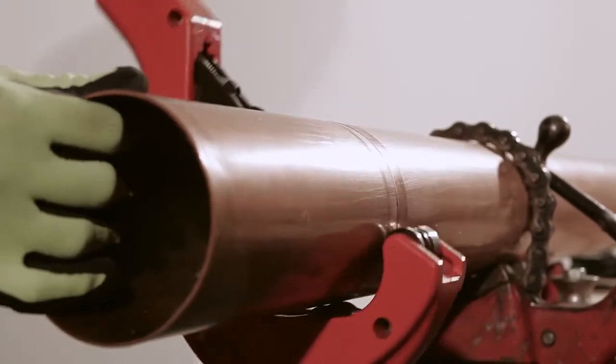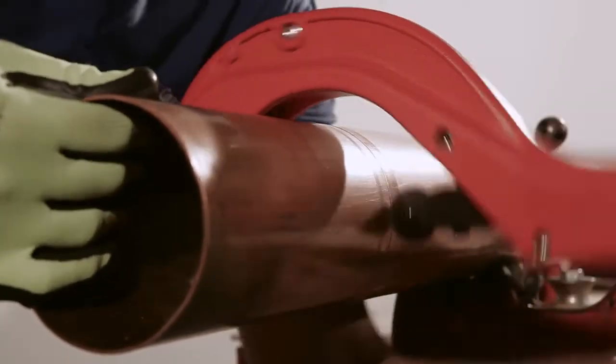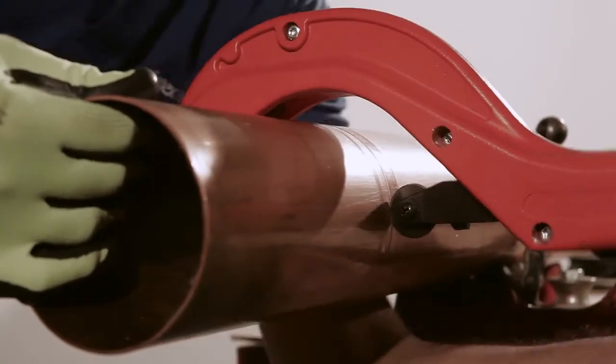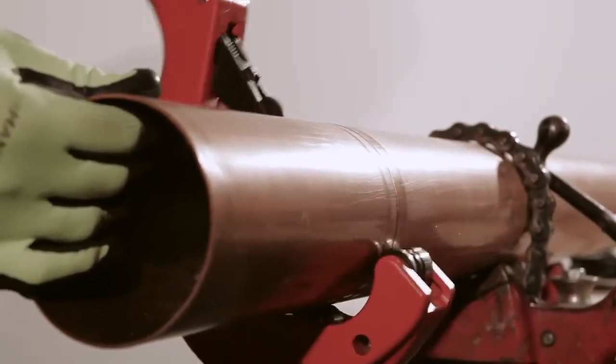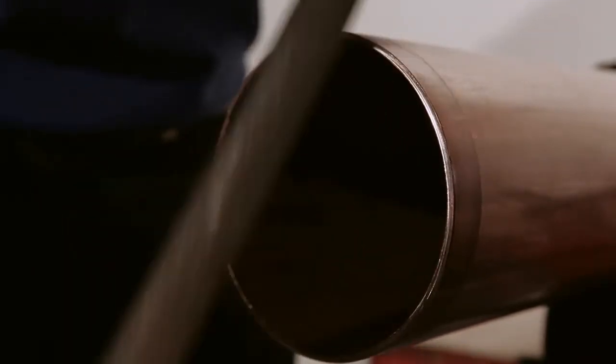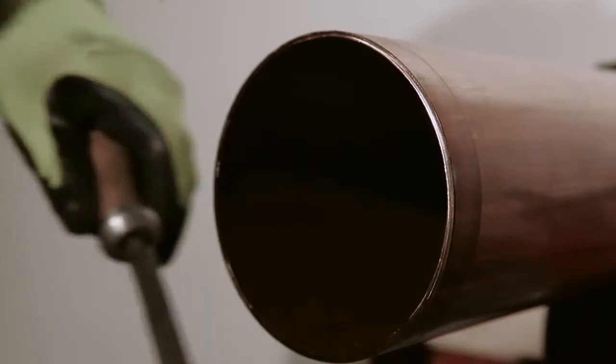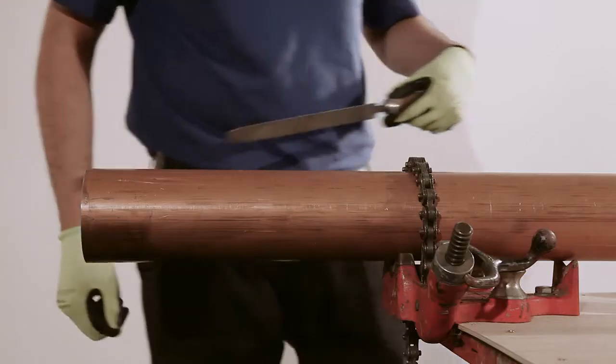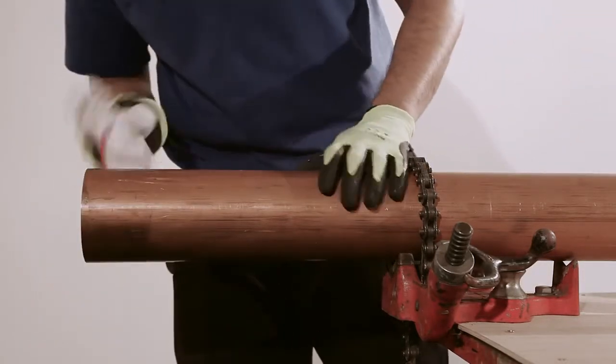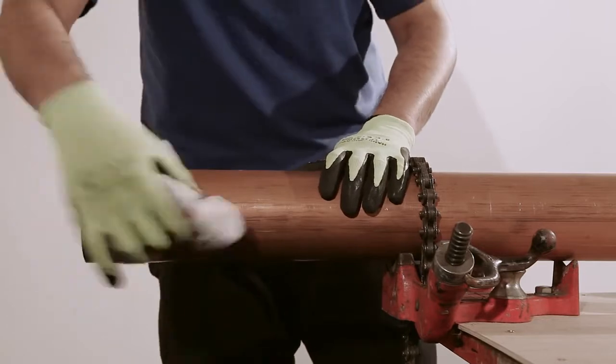Using the tube cutter at the prescribed mark, cut the tube squarely supporting the removed section as the cut completes. With the file, deburr any internal sharp edges and then complete an external chamfer to allow the fitting to be inserted without any damage to the seal rings. Finally, wipe the end of the tube with the clean cloth to remove any remaining dirt or swarf.